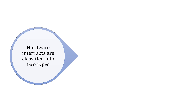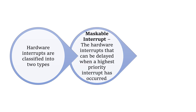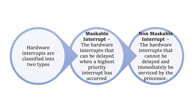Hardware interrupts are classified into two types: the maskable interrupt and the non-maskable interrupt. Maskable interrupts are hardware interrupts that can be delayed when a higher priority interrupt has occurred. Non-maskable interrupts are hardware interrupts that cannot be delayed and must be immediately processed by the processor.